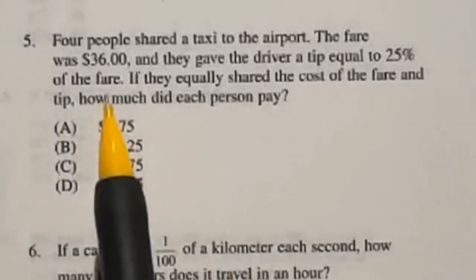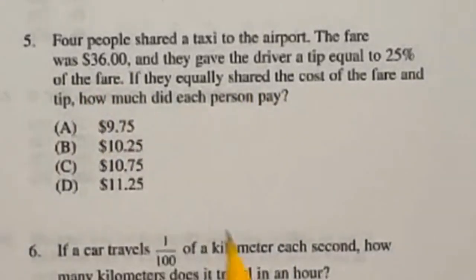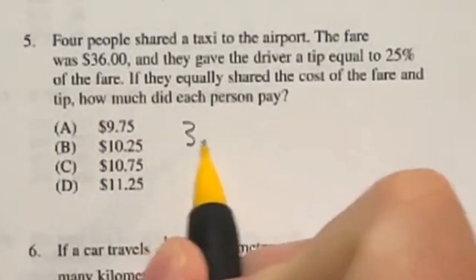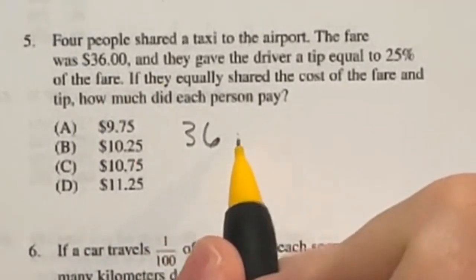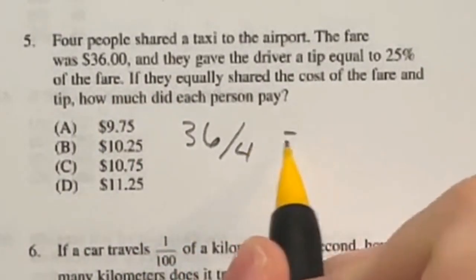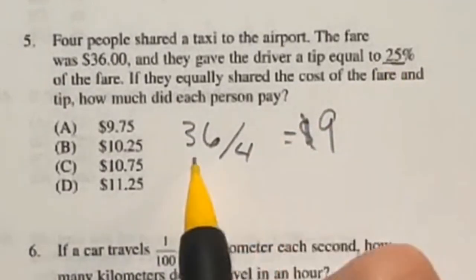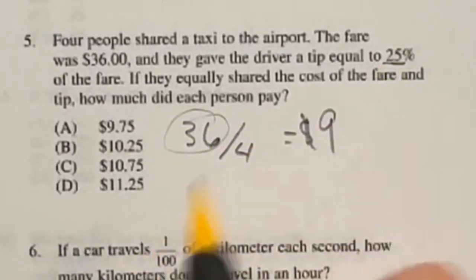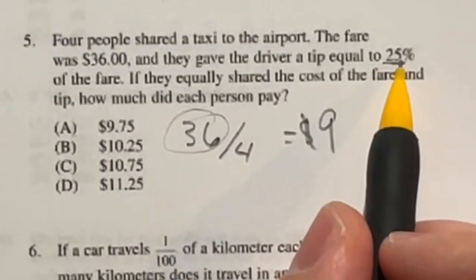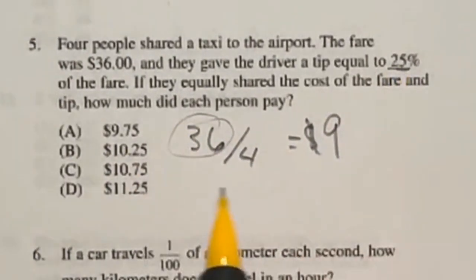So we have four people sharing a taxi, and it's going to cost them $36, and they're going to split that four ways. That means each one of them is paying $9, but they're also tipping 25% of that whole 36. Well, 25% is also just a way of saying one-fourth of your original number.